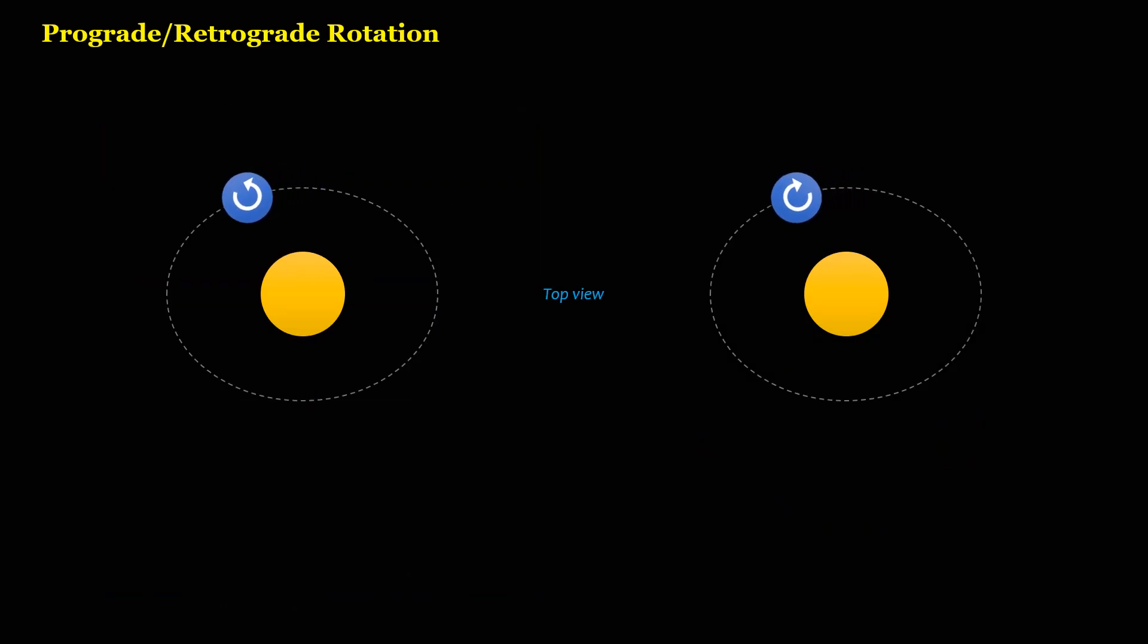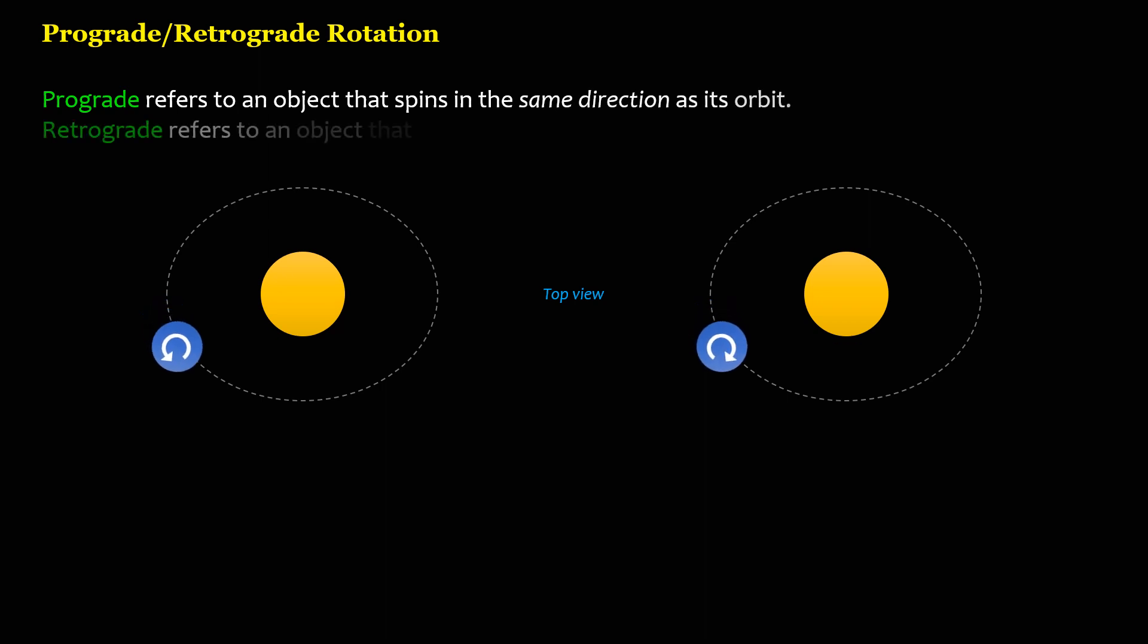Prograde and retrograde rotation. Prograde refers to an object that spins in the same direction as its orbit. Retrograde refers to an object that spins in the opposite direction of its orbit.